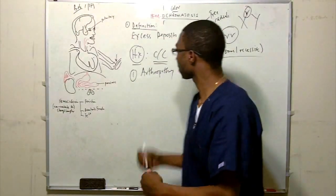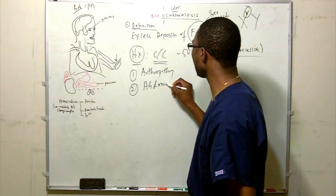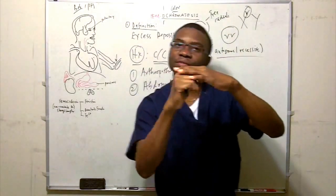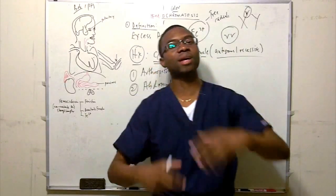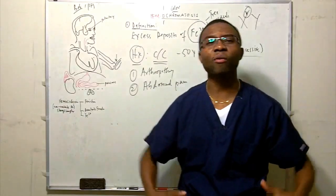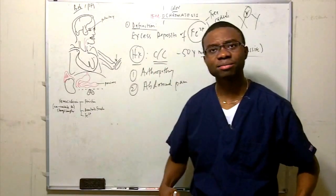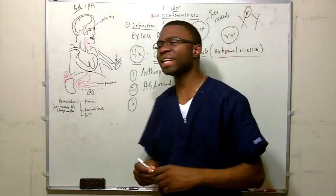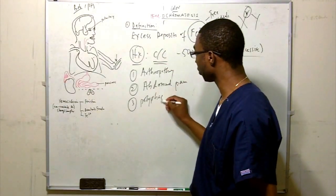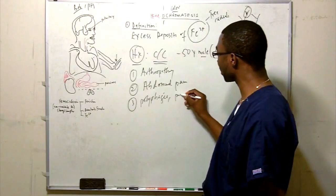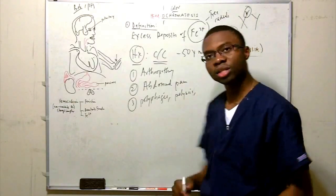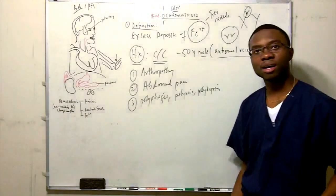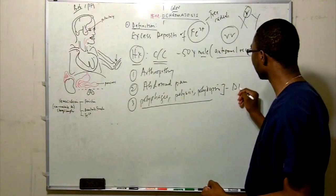Next, Bob is complaining of abdominal pain. Inside the GI tract is not where iron is supposed to be. Free radical generation inside the wall of your GI tract causes a lot of pain. Then they start complaining about eating a lot — polyphagia — and urinating a lot — polyuria — and drinking a lot — polydipsia. What do all three of those symptoms fall into? Diabetes mellitus.